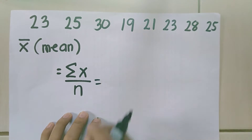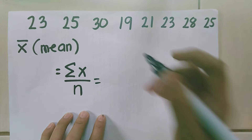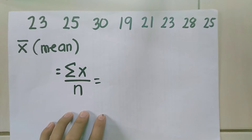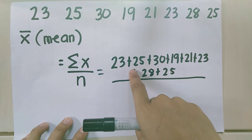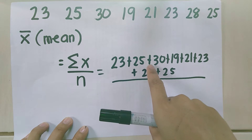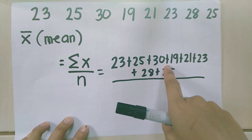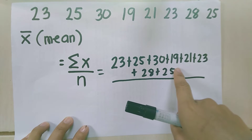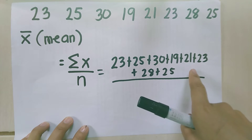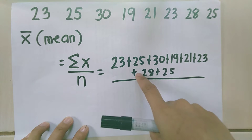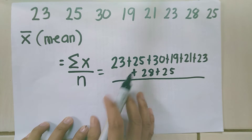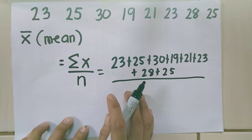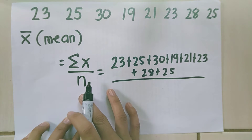n is the number of how many data we have. Let's add: 23 plus 25 plus 30 plus 19 plus 21 plus 23 plus 28 plus 25. We are going to add it all and divide by n.